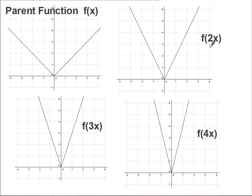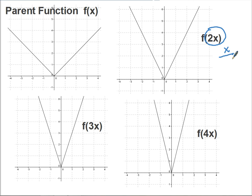Now let's look at what happens when we multiply inside the function, going back to the absolute value graph. Remember, when you have something inside the function it does the opposite of what you'd think — adding to x moved the graph left; subtracting moved it right. Same thing here: multiplying by 2 inside the parentheses looks like it would multiply all x values by 2, but actually I'm going to divide all x values by 2. With 3x inside, I divide all x values by 3; with 4x inside, I divide all x values by 4.